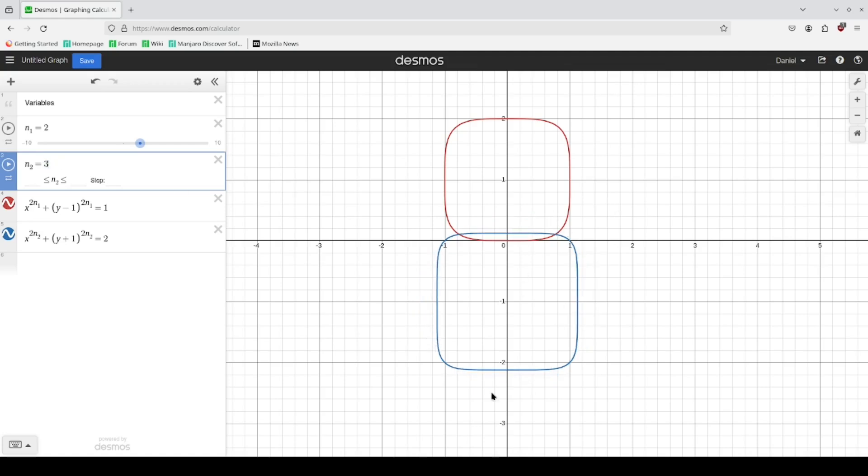Now if you were to increase this in whole number increments, you can see that we're getting flatter shapes.